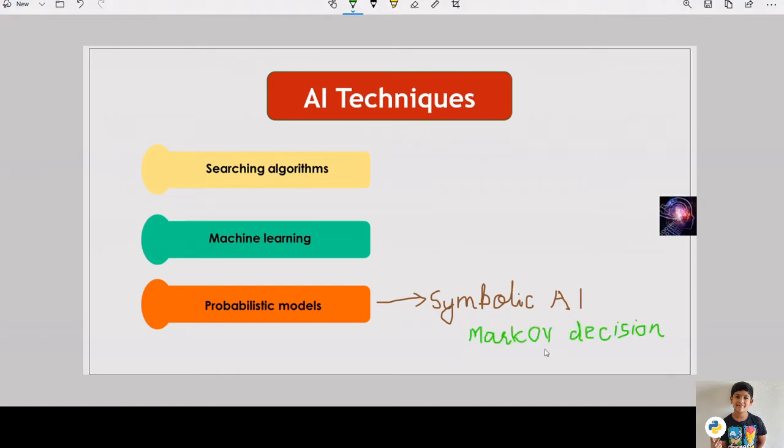For example, Markov decision-making is a process method used to map probability based on steps in the process. Here only current steps will be used to determine the future steps.